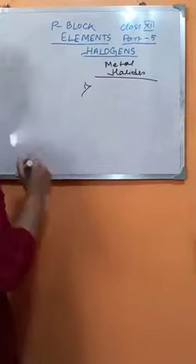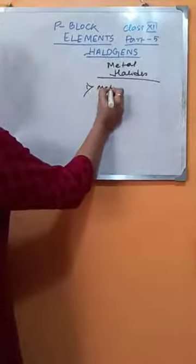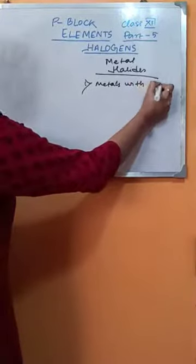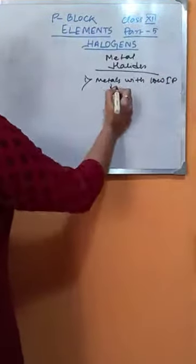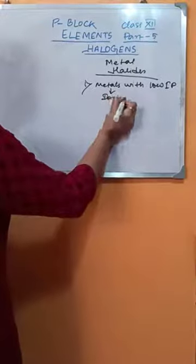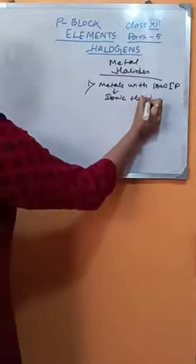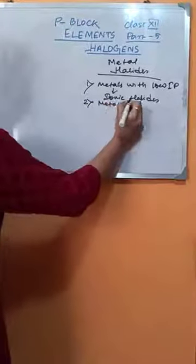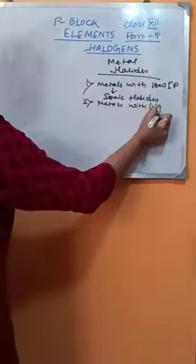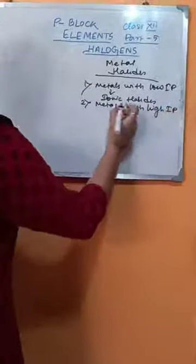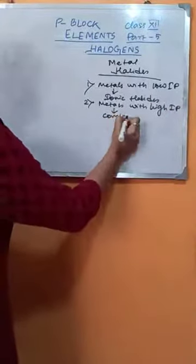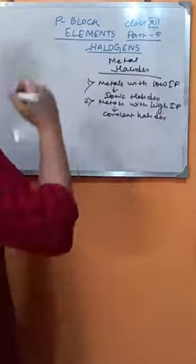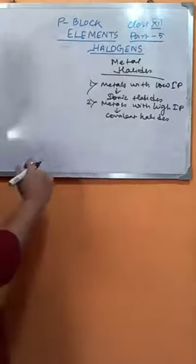In case of metal halides, the metals with low ionization potential will form ionic halides, and the metals with high ionization potential will form covalent halides.